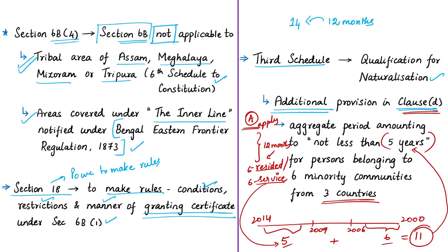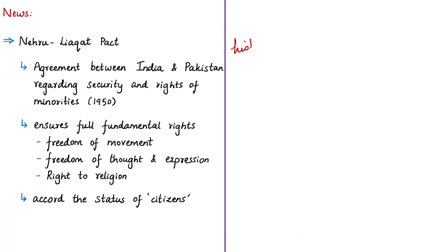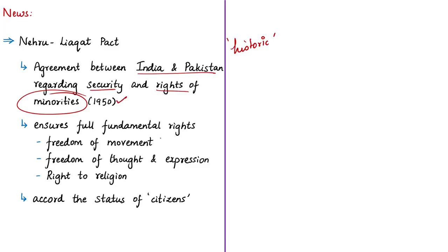This bill has been called a historic bill by the Union Home Minister. He also noted that the bill sought to complete what the Nehru-Liaquat Pact could not do. The Nehru-Liaquat Pact is the agreement between India and Pakistan regarding the security and rights of minorities. Signed in 1950, it was an outcome of six days of talks between the two countries, with Prime Ministers Jawaharlal Nehru and Liaquat Ali Khan wanting to ensure minority rights and avert another war.